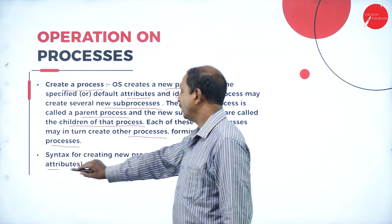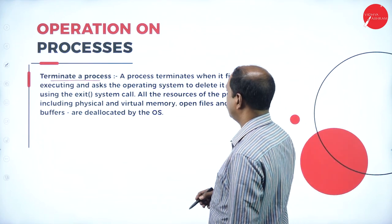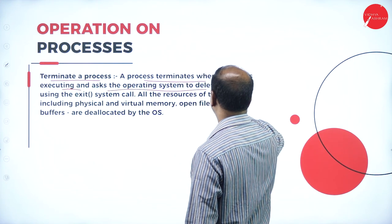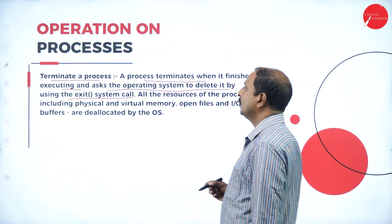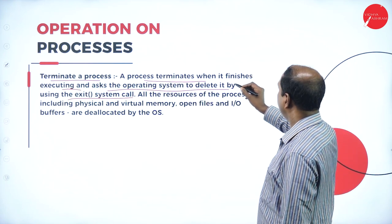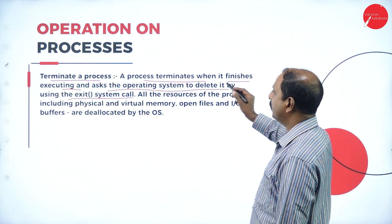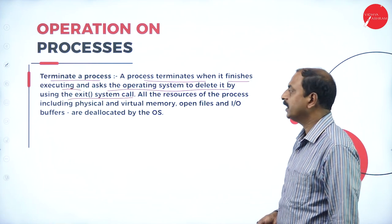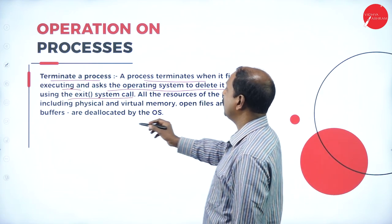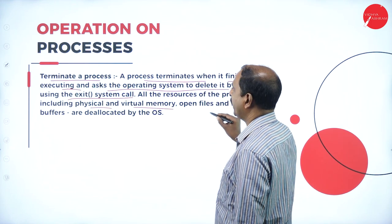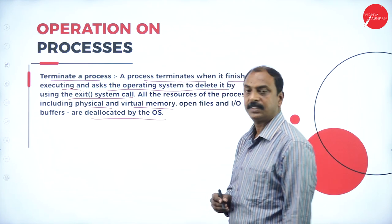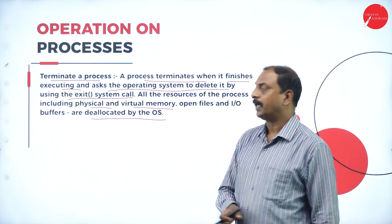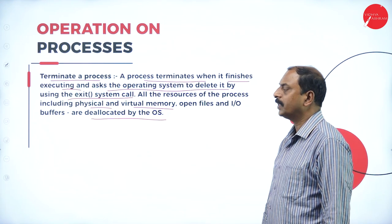The next operation is terminating a process. A process terminates when it finishes executing and asks the operating system to delete it using a system call. When the process has completed its task, it has to be removed from the CPU or from memory using a system call. All resources of the process — including physical and virtual memory, open files, and IO buffers — are deallocated by the operating system.